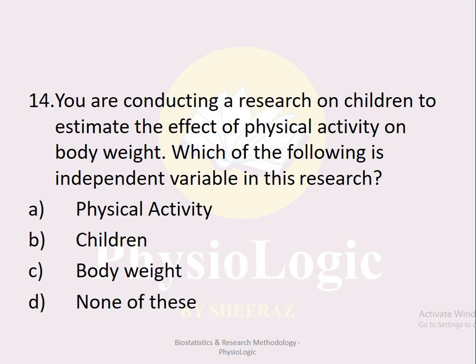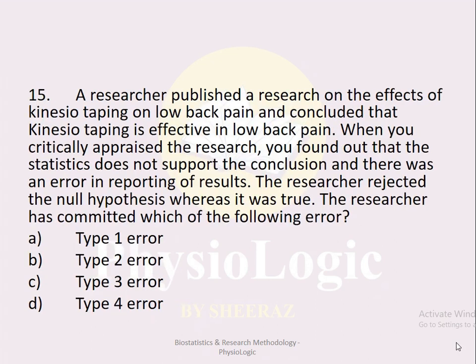MCQ number fourteen: You are conducting research on children to estimate the effect of physical activity on body weight. Which of the following is the independent variable? Option a physical activity, option b children, option c body weight, option d none of these. The correct option is option a, physical activity. The variable that causes an effect on another variable is the independent variable; physical activity is causing an effect on body weight, so it is the independent variable.